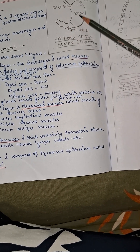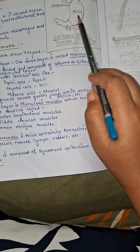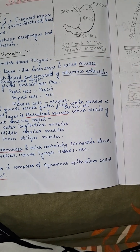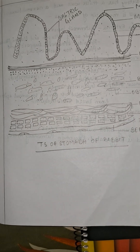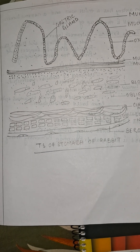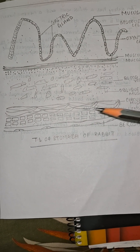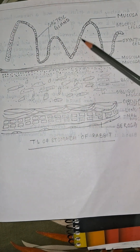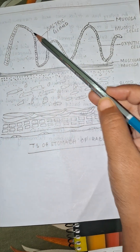The stomach is a hollow organ. If we cut the transverse section of the stomach and observe it under the microscope, we will observe various structures — various layers are found in the stomach. This type of layered structure is basically divided into four layers in the stomach. The first layer, or the innermost layer, is called the mucosa layer.